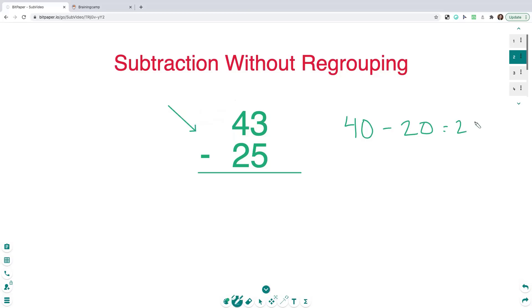So far your answer is 20, but you still have to subtract the ones. So you have 3 minus 5. Now, the difference between 3 and 5 is 2, but because 3 is smaller than 5, this leads to a negative 2.